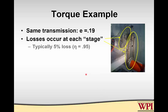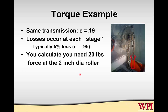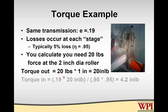We have losses occurring at both stages; we'll say efficiency is 0.95 per stage. If we want a force that the roller can apply of 20 pounds, and it's a 2-inch roller, the moment arm is the radius, or 1 inch — so we need 20 inch-pounds of output torque. The torque input would then work out to be 4.2 inch-pounds. We multiply by the speed ratio and divide by the product of the efficiencies. Without friction, 0.19 times 20 would be 3.8 inch-pounds; because of friction, we need greater input — 4.2 inch-pounds.